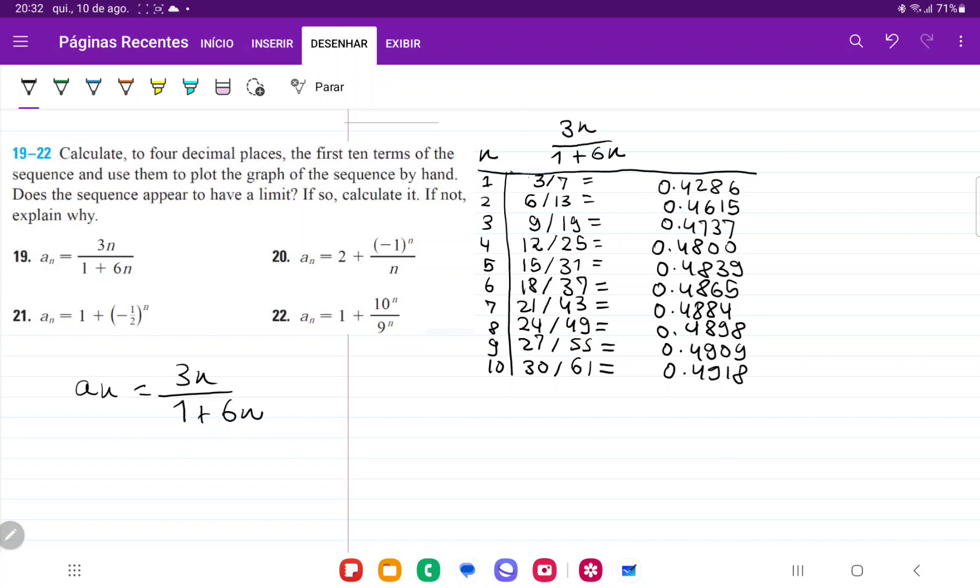So I've gone ahead here and put a little table where for n equals 1, I would plug in 3 times 1 over 1 plus 6 times 1, so that's 3 over 7. And then for n equals 2, on the top would be 3 times 2 divided by 1 plus 6 times 2, so that would be 13, and then so on until n equals 10.